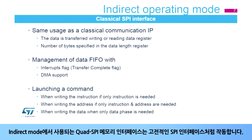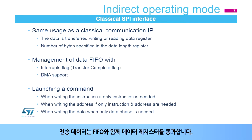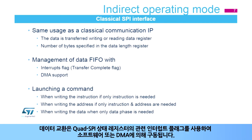The Quad SPI Memory Interface, used in indirect operating mode, behaves like a classical SPI interface. Transferred data goes through the data register with FIFO. Data exchanges are driven by software or by DMA, using related interrupt flags in the Quad SPI status registers.